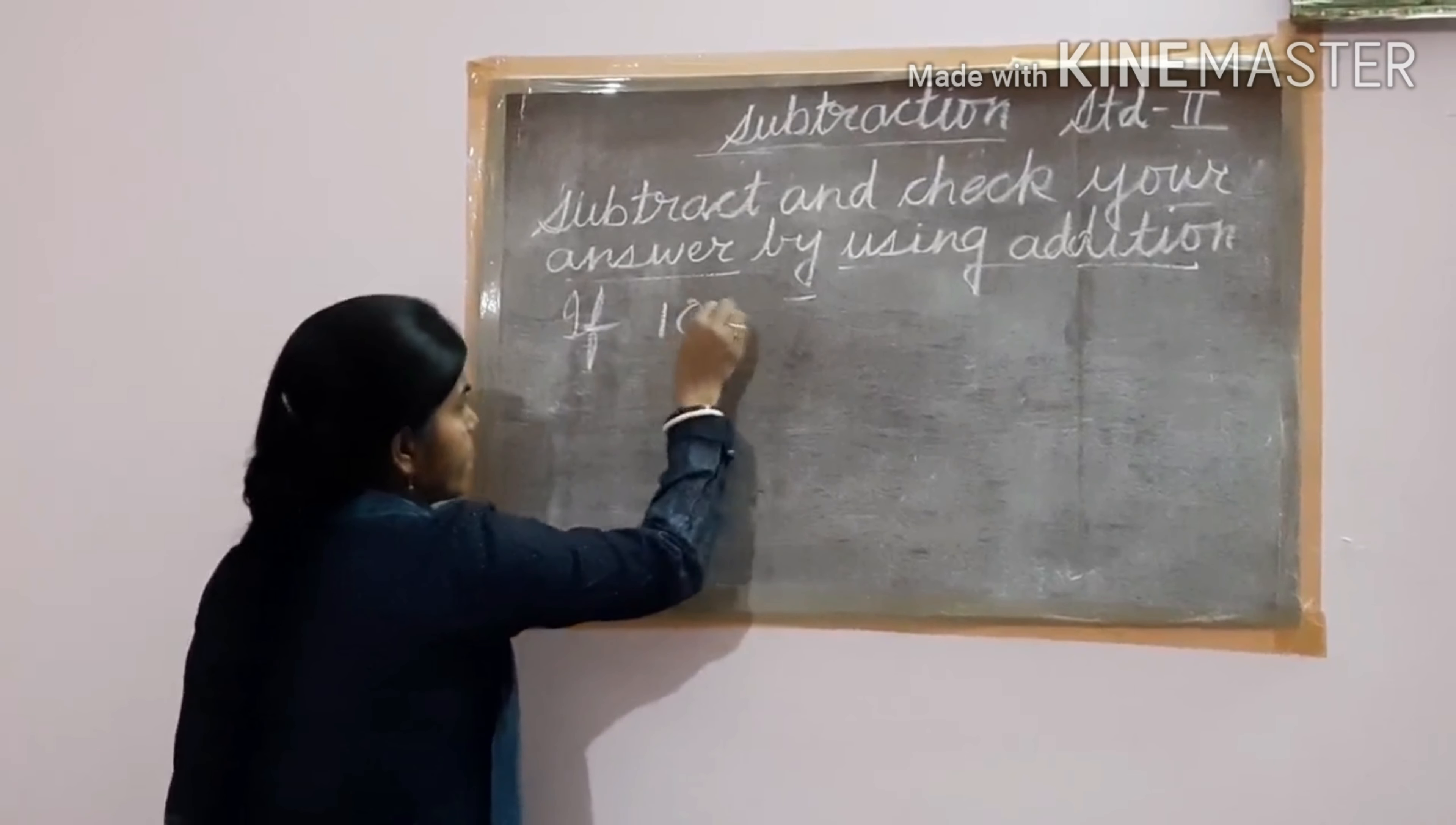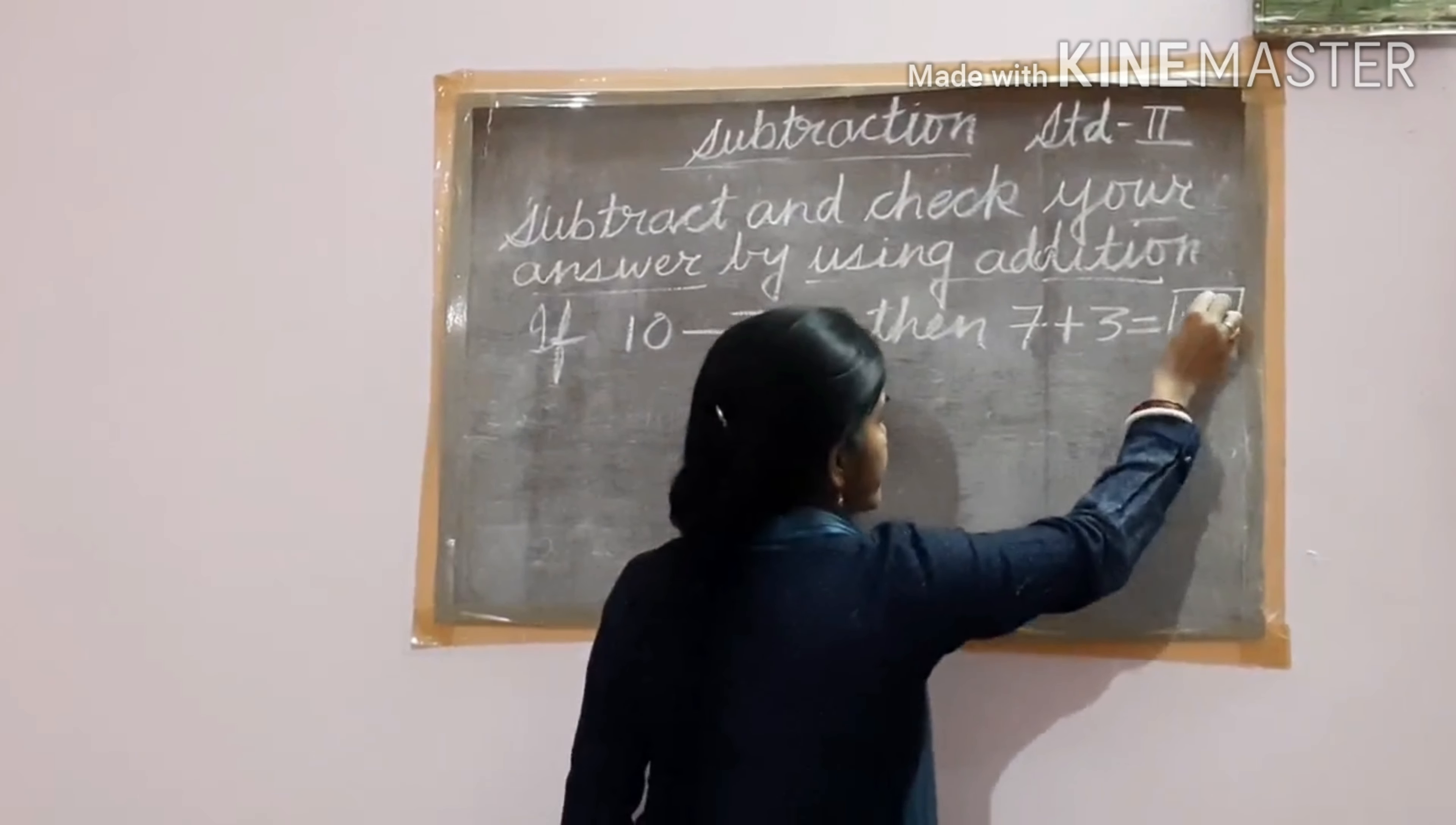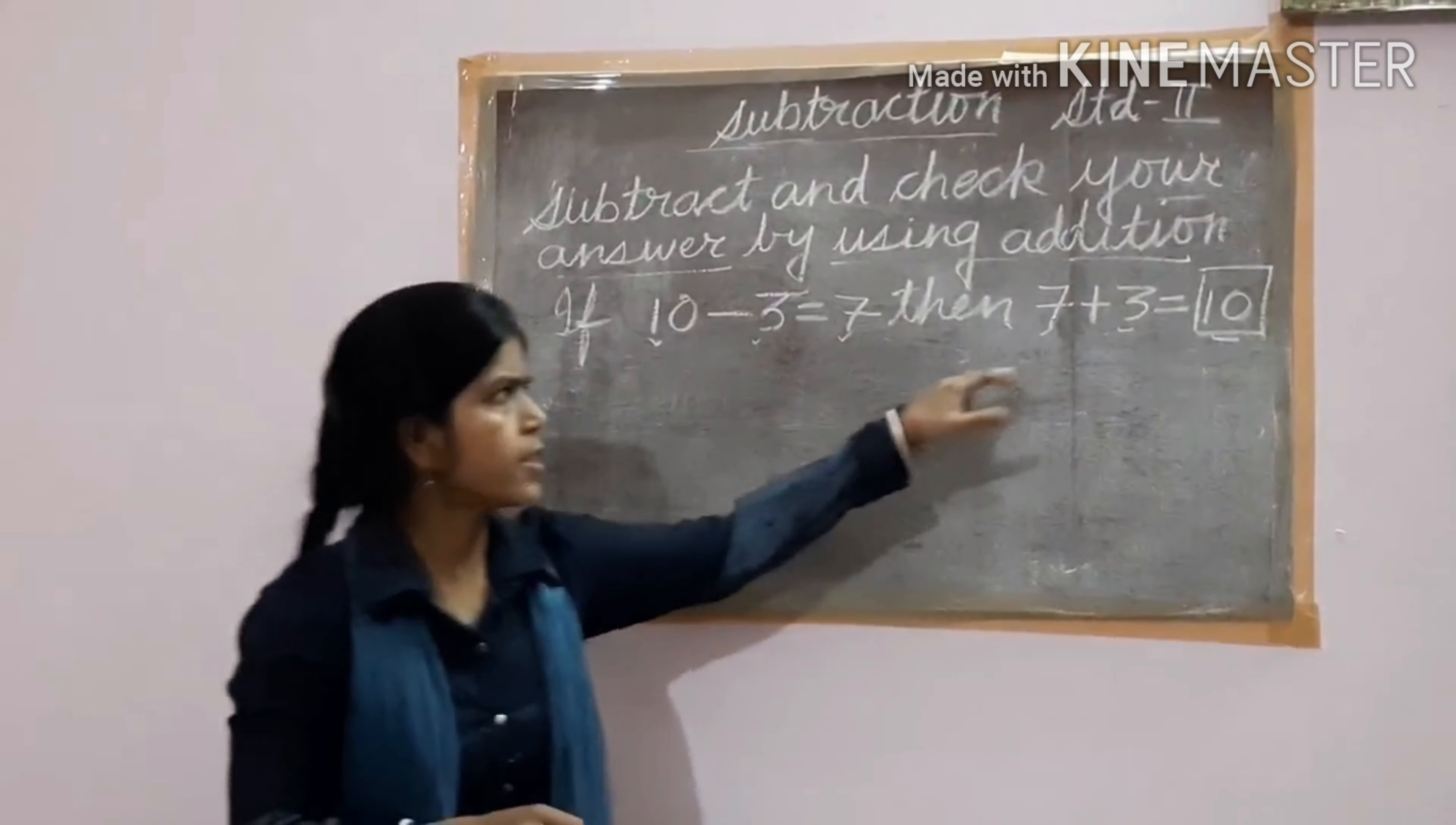Now one more thing. 10 minus 3 is equal to 7. Then 7 plus 3 is equal to how much? You know addition, that is 7 plus 3, 10. Children, are you able to see there is some relation between these two things? The numbers are same. Here is also 10, here is also 10. Here is 3, here is also 3. Here is 7, here is also 7. But one is subtraction fact and one is addition fact.